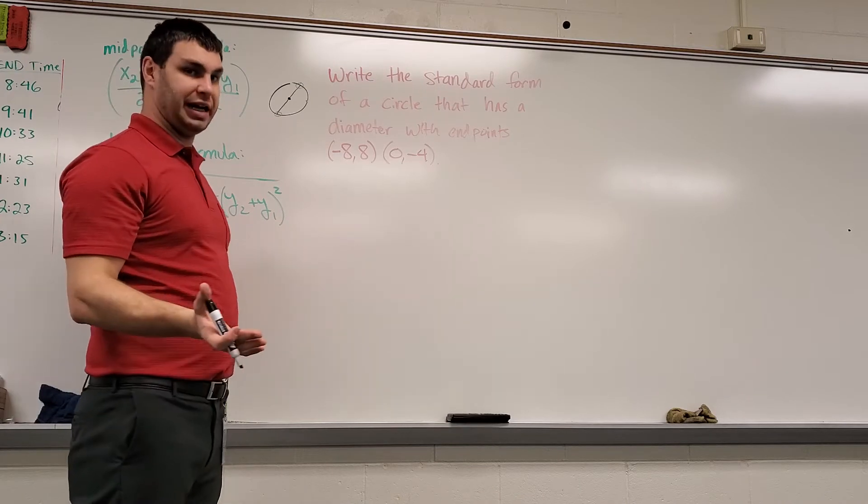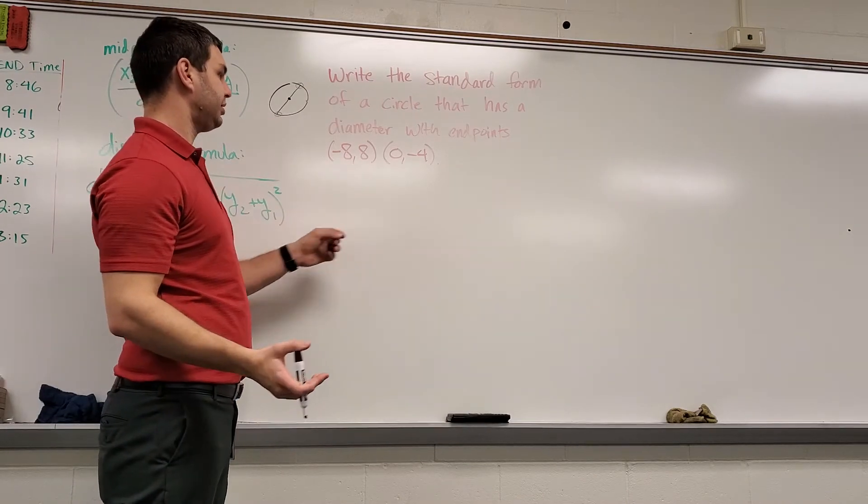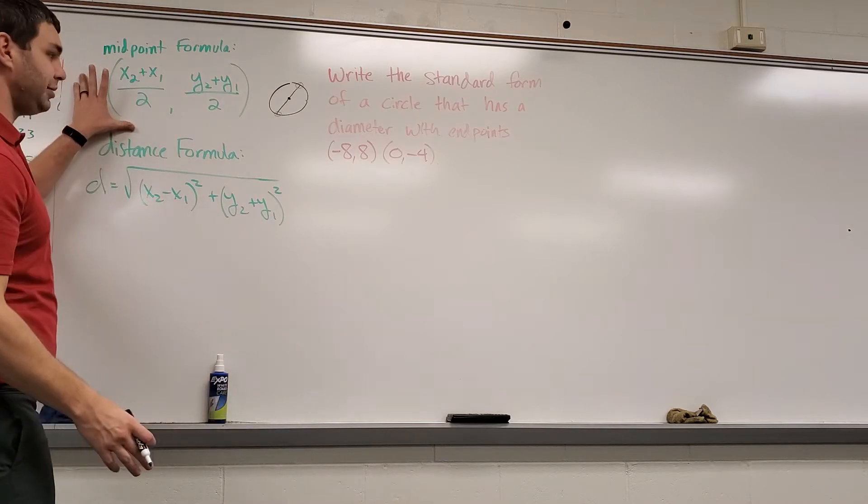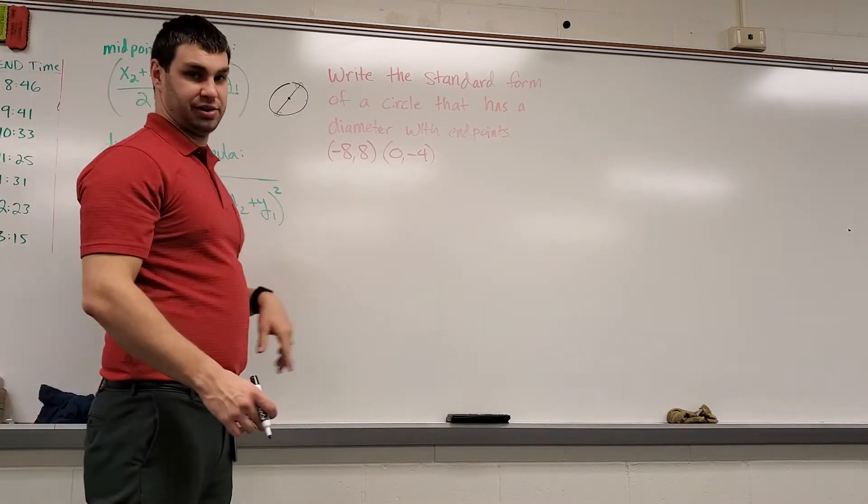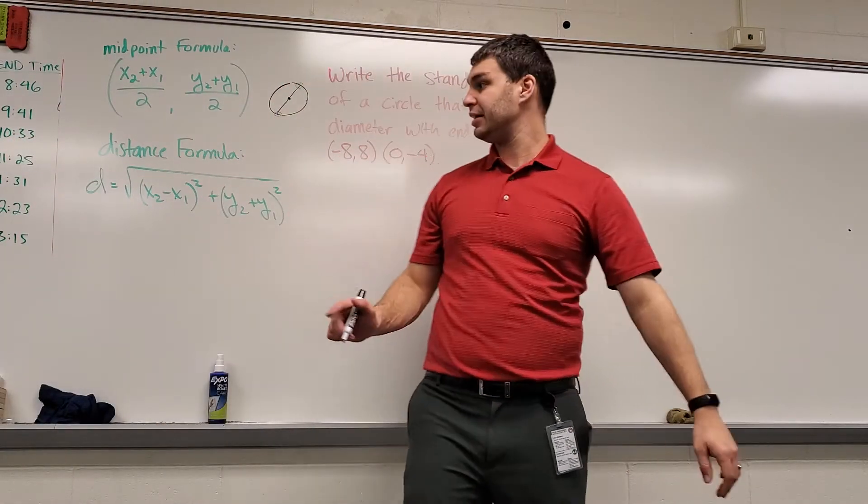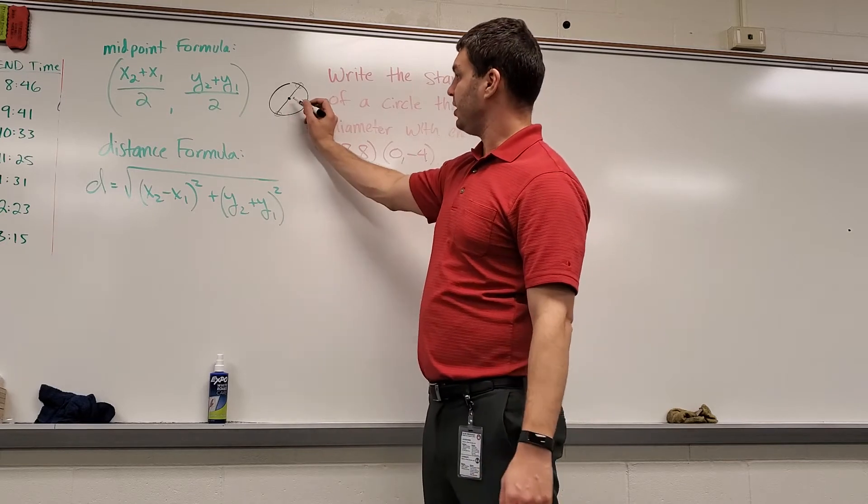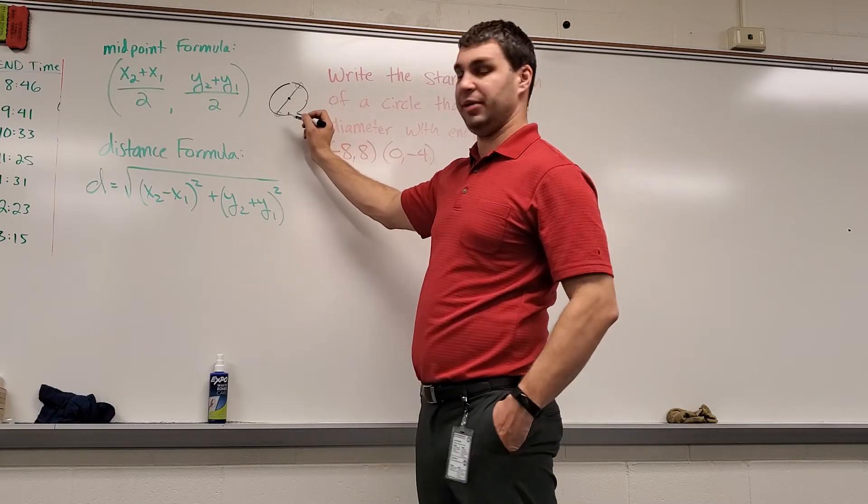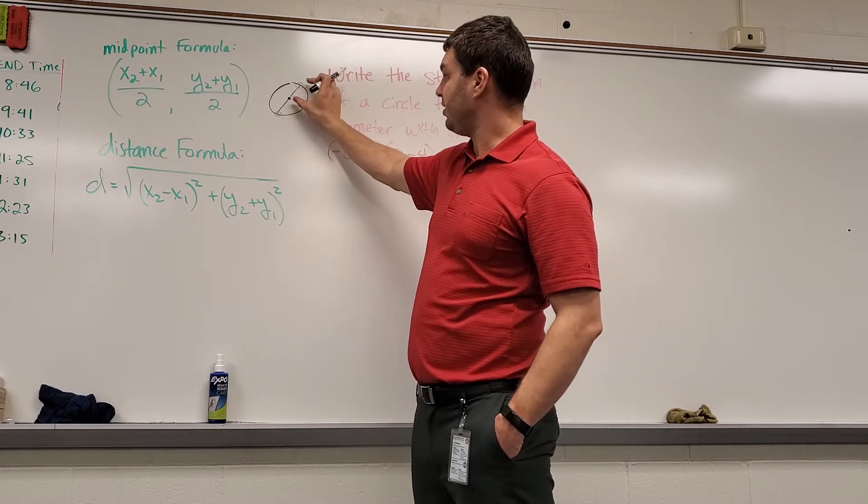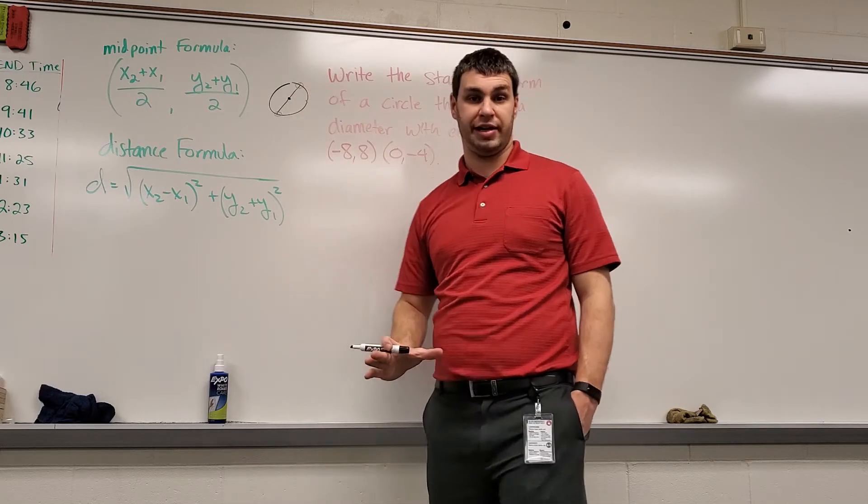So what I need to do with that is I'm going to take those endpoints. If I find the midpoint using my midpoint formula, that's going to give me the center. Then what I can do is take the center and one of the two endpoints of my diameter and find that distance, and that's going to be a radius.